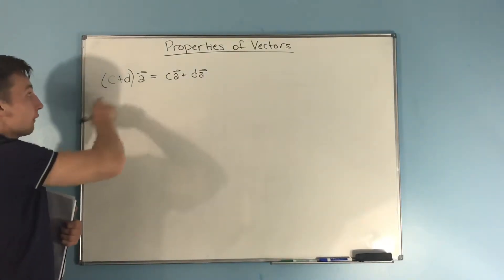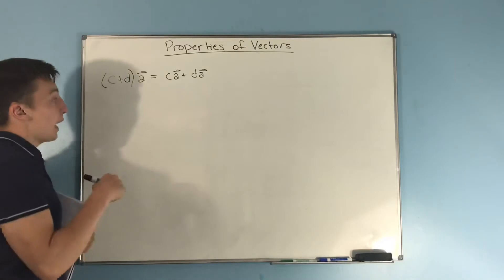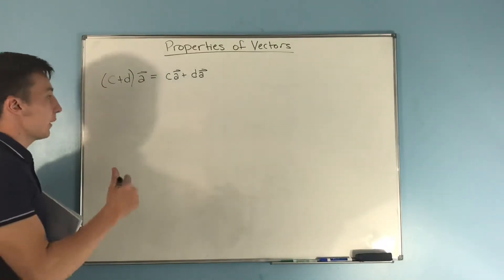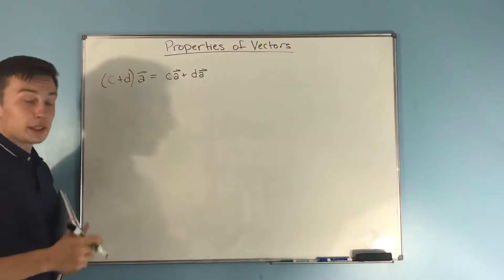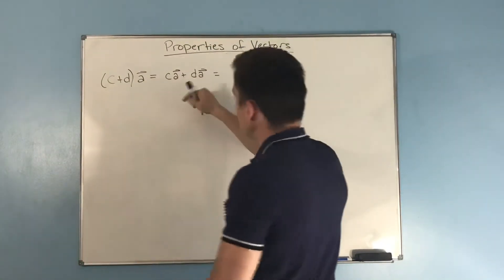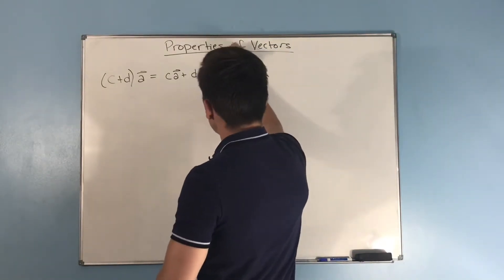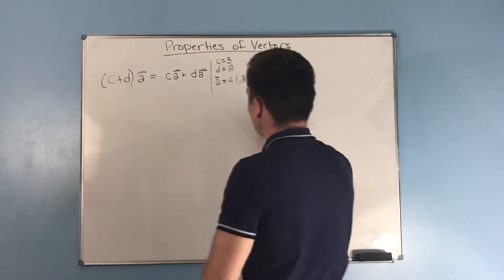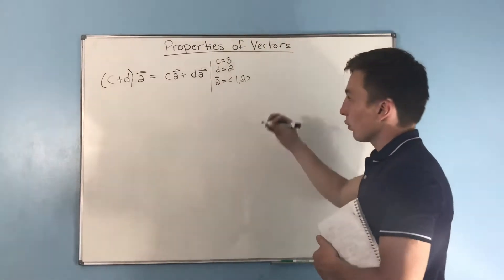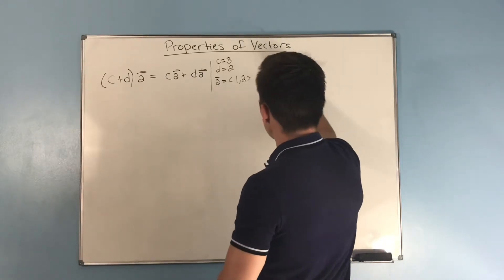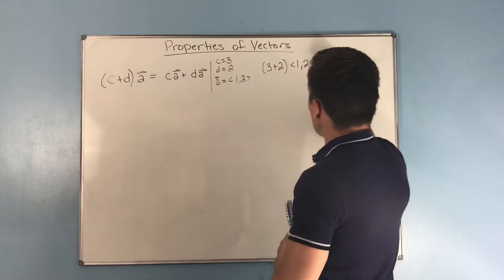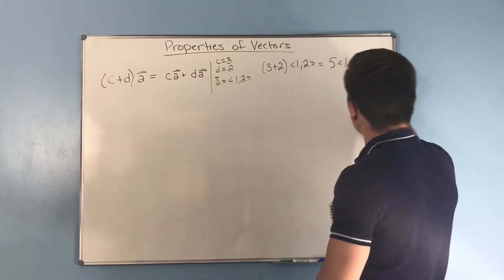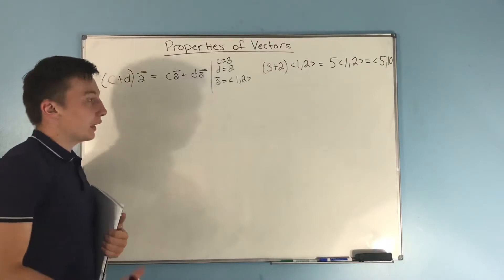Now, our next property is that if you have two scalars being added together, and then you're going to multiply that by a, that's the same thing as just distributing this vector through, rather than distributing the scalars through, which we did in the last property. You can distribute the vector through just the same. So if we have that c is equal to 3, d is equal to 2, and vector a is equal to 1,2. Well, then we have on the left side, we would have that a 3 plus 2 times 1,2. And that's equal to a 5 times 1,2, which is 5,10. And that all makes sense.